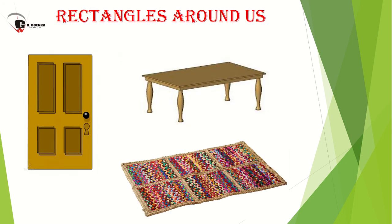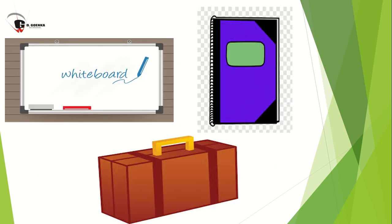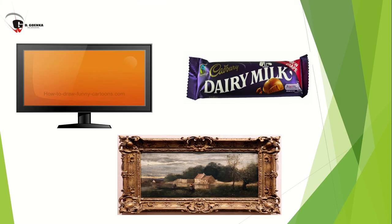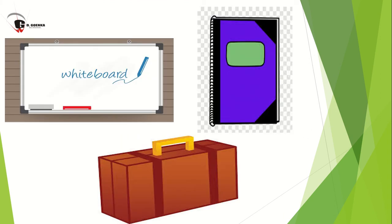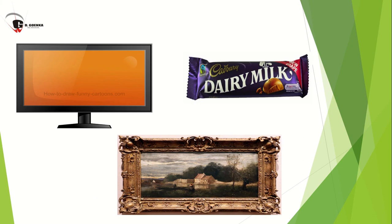So we have many rectangles around us. Let's see. A door, a table, a doormat. They all are in rectangular shape. A whiteboard, a book, a suitcase, some more, your LED, chocolate, photo frame. They are in rectangular shape.